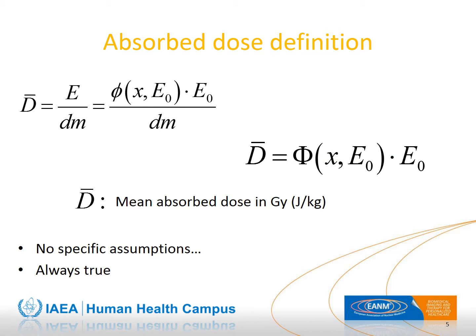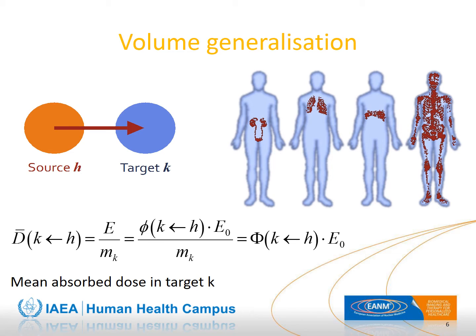The absorbed dose is the energy divided by the mass of the volume where the energy is deposited, expressed in joules per kilogram or gray. In the context of the MIRD formalism, the absorbed dose is just the emitted energy E0 multiplied by the absorbed fraction divided by the mass, or E0 multiplied by the specific absorbed fraction. If we define a source H where activity is homogeneously distributed and a target K where the absorbed dose is computed, then the mean absorbed dose in target K from source H is E0 multiplied by the specific absorbed fraction from the source to the target.